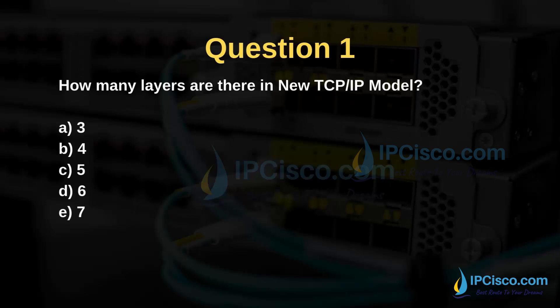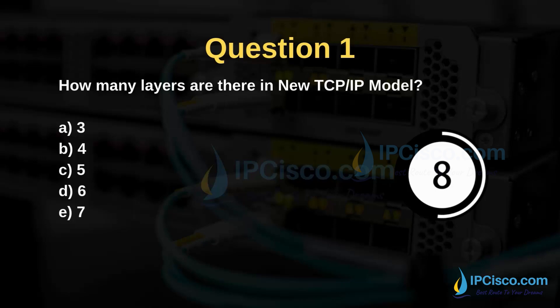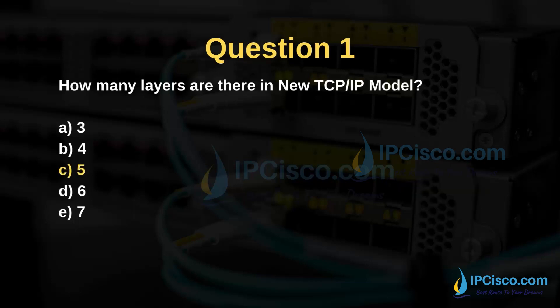Question 1: How many layers are there in the new TCP/IP model? The options are 3, 4, 5, 6, or 7. The answer is 5 layers. The new TCP/IP model has 5 layers.